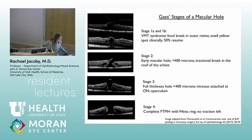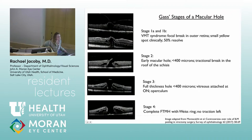Gass originally described the various stages of a macular hole. In stage 1a and 1b there are cystic changes in the retina, and in stage 1b there's an outer retinal break. On clinical examination you'll see a little yellow spot or yellow ring right in the fovea. Fifty percent of stage 1 holes resolve on their own, so we don't recommend intervention at that time, but we watch them closely for progression to stage 2.